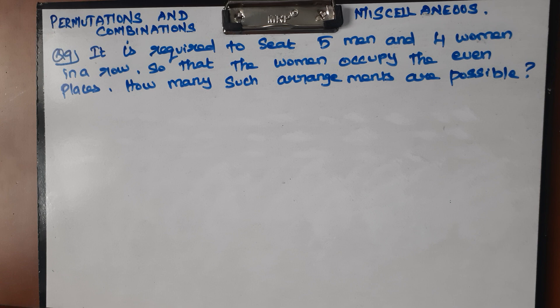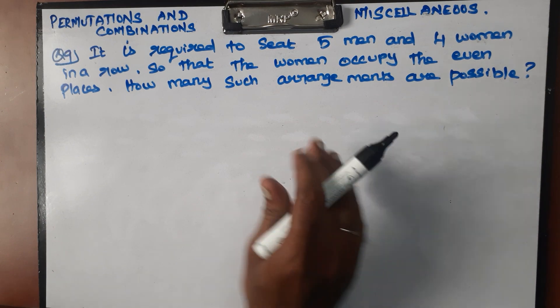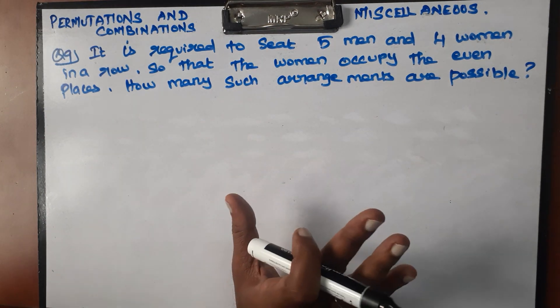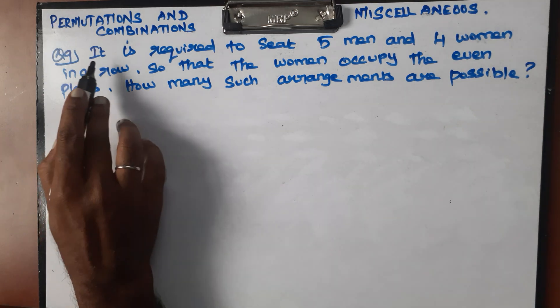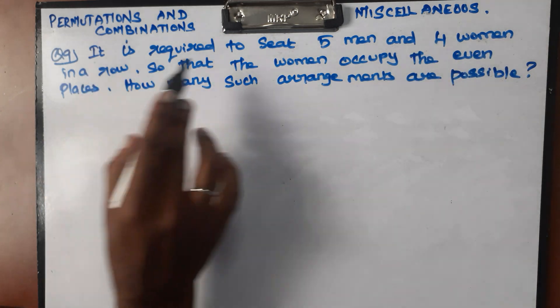Question number 9. Let's look at it: it is required to seat five men and four women in a row so that the women occupy the even places.